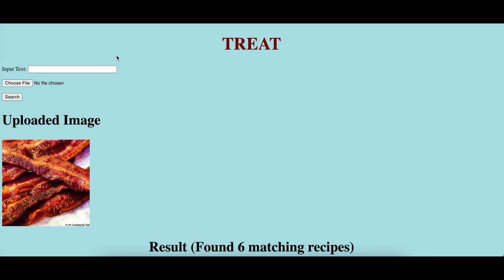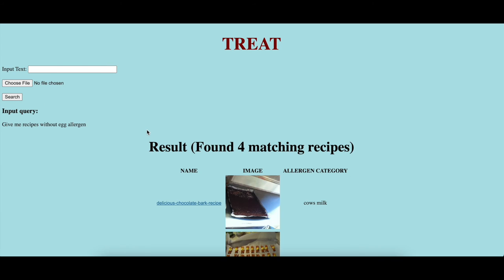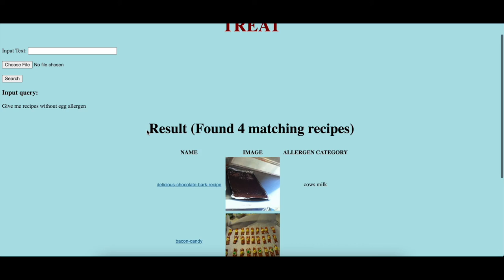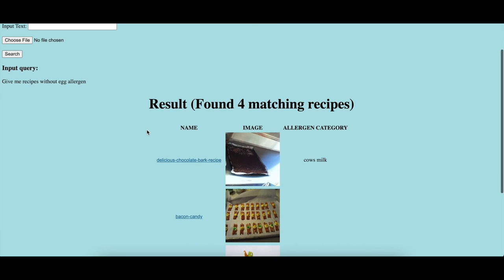Further, with the help of R3 on the backend, the system also supports allergen-based queries. Here the user asks: give me a recipe without egg allergen. In this query, the user explicitly mentions the allergen category, and the system matches the query with four recipes and displays those four on the user web interface.